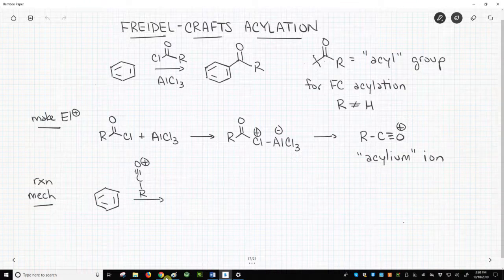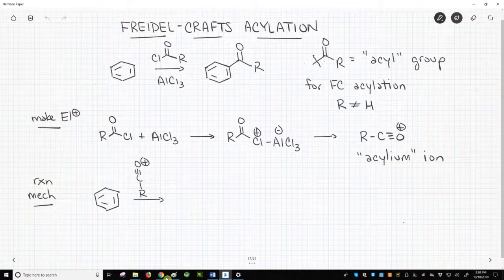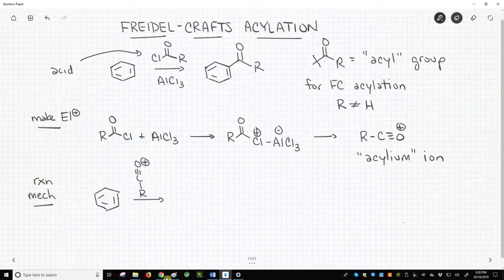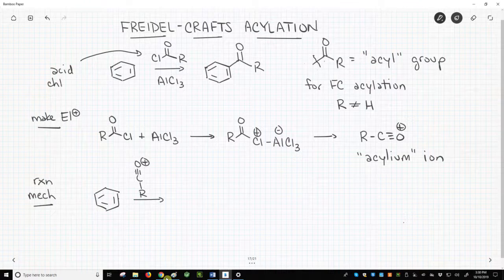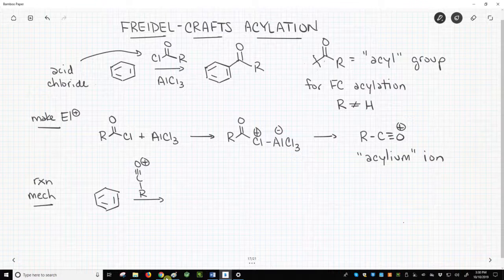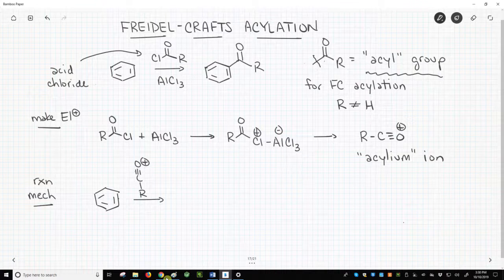Let's define a couple terms. One, an acid chloride contains a carbonyl attached to a chlorine atom. And now we're on the right hand side of the slide. An acyl group is a carbonyl with an R group.